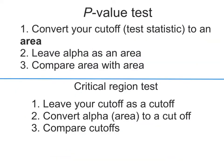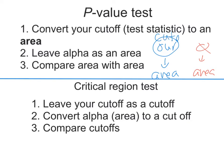That's exactly what the two different tests do. We have two numbers to compare: our value (a cutoff) and the alpha value (an area). The p-value test takes our cutoff and converts it to an area. Alpha is already an area, so now it makes sense to compare area with area.